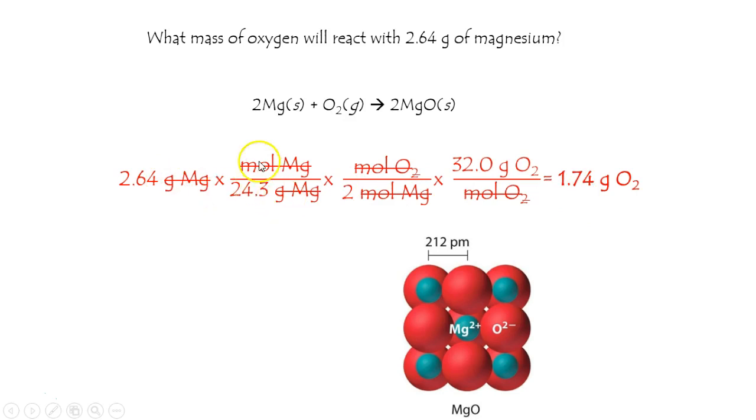Punching all this in, verifying that the units cancel nicely, shows us that we need at least 1.74 grams of oxygen to react completely with 2.64 grams of magnesium.